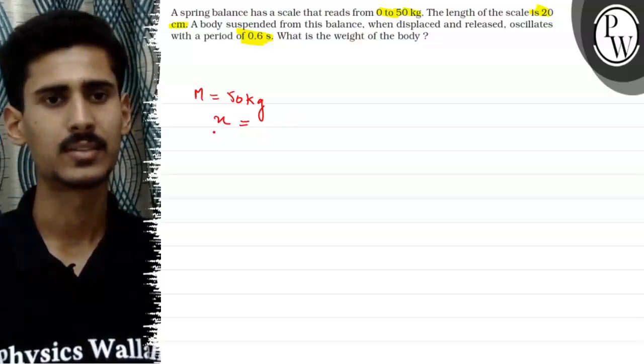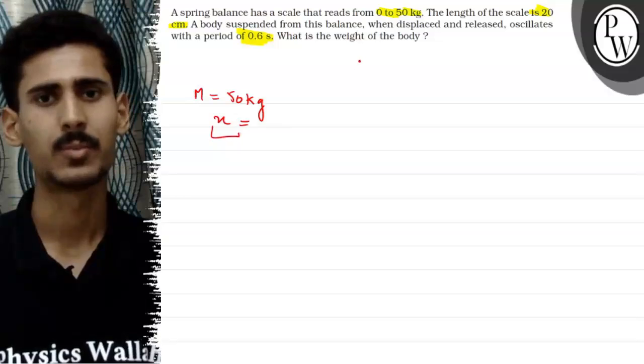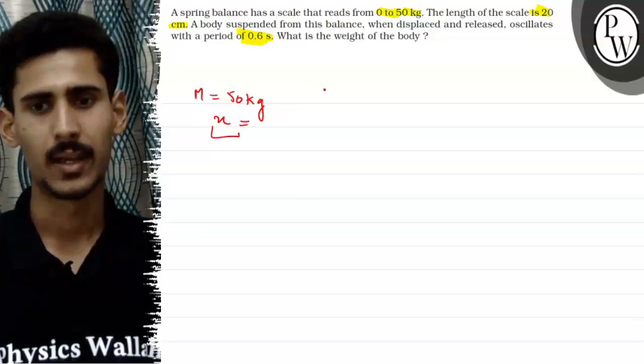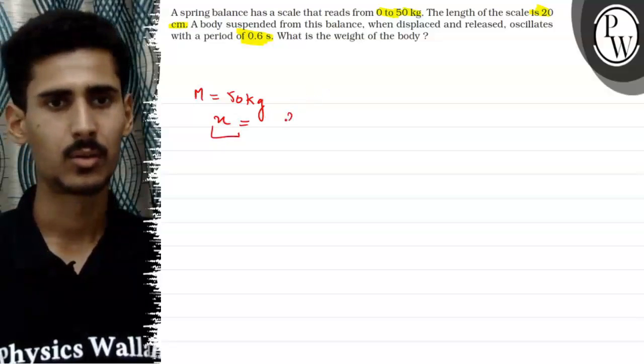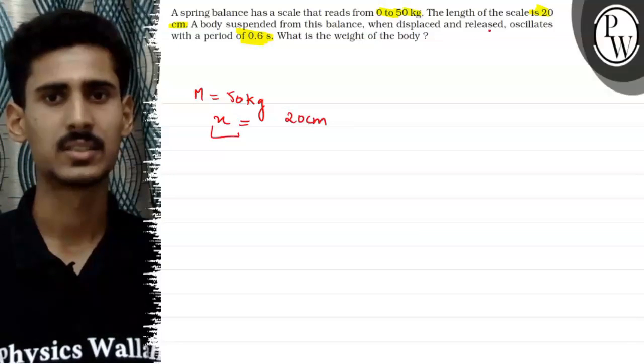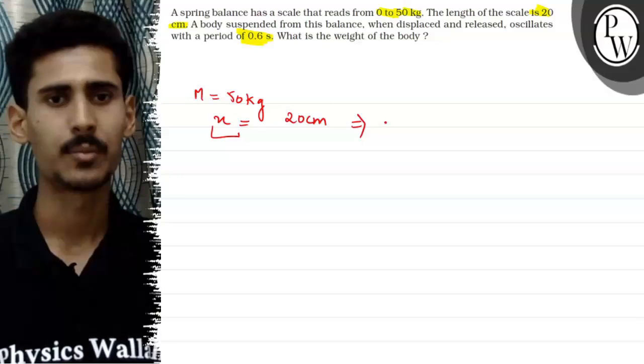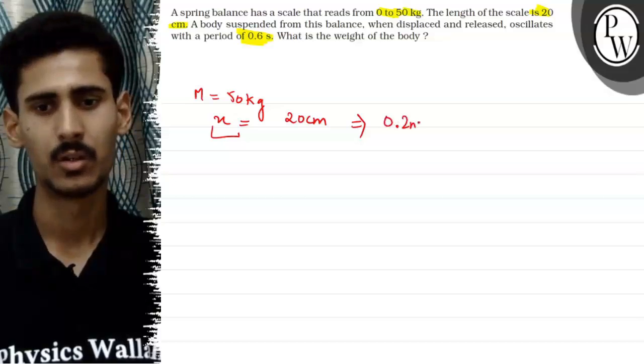So the maximum displacement x is given by 20 centimeter which is the length of the spring balance. And 20 centimeter can be written as 0.2 meters.